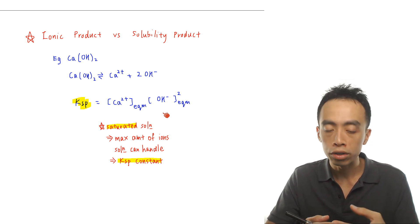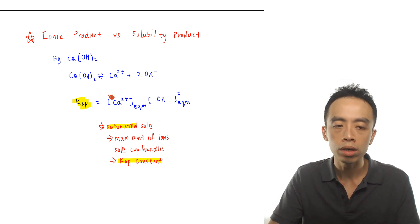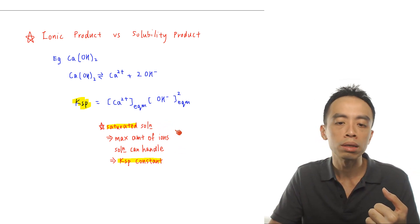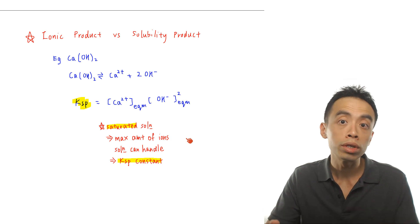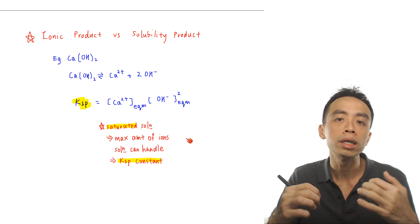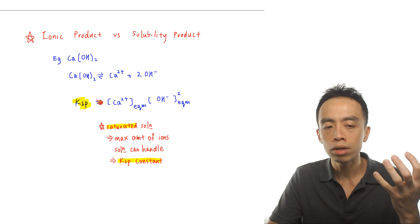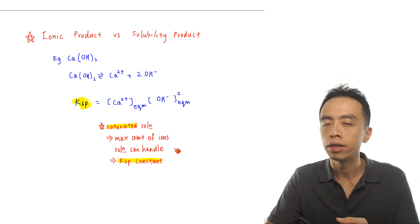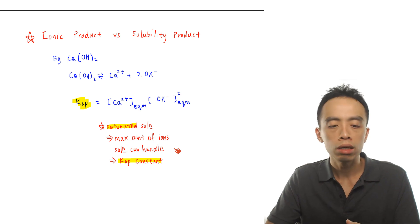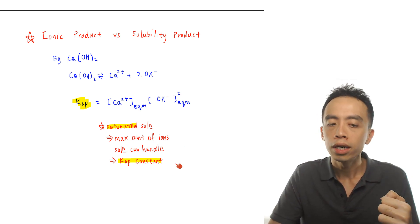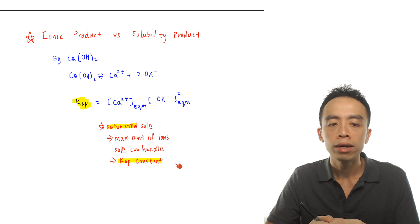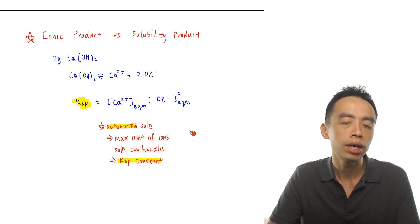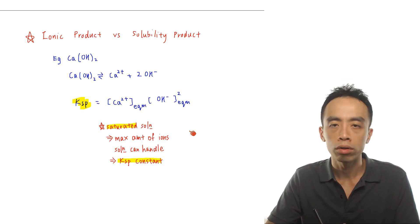So Ksp is measuring the concentration of ions inside a saturated solution — this relationship is very important. Ksp only applies to a saturated solution, which represents the maximum amount of ions that the solution can handle. And of course, since Ksp is an equilibrium constant, it is a constant term if there is no change in temperature. So the maximum amount of ions that the solution can handle at a particular temperature remains constant.